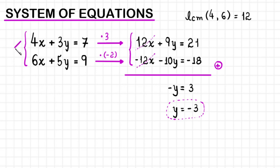This first one seems easier, so let's work with it. We have 4x plus 3 times y, but we already know y equals negative 3, so 4x plus 3 times negative 3 equals 7.